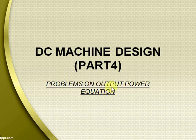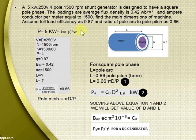Problems on Output Power Equation. A 5 kW, 250V, 4-pole, 1500 RPM shunt generator is designed to have a square pole phase. The loadings are average flux density is 0.42 Weber per meter square and ampere conductor per meter equal to 1500. Find the main dimensions of machine. Assume full load efficiency as 0.87 and ratio of pole arc to pole pitch as 0.66.